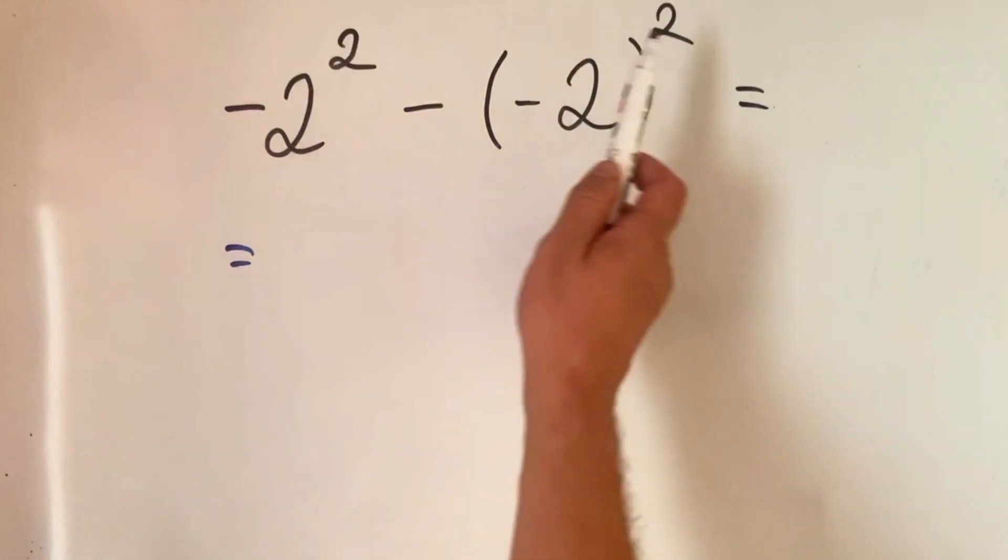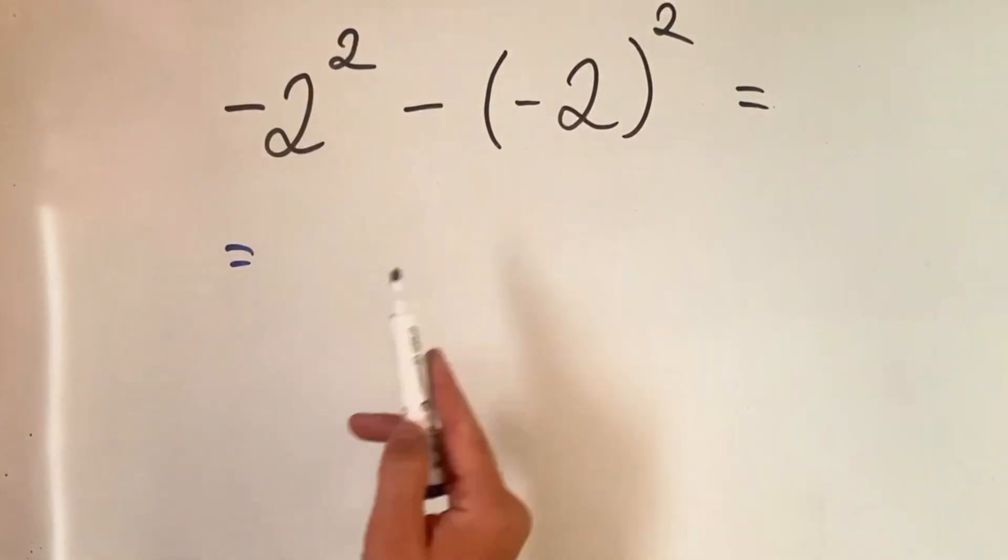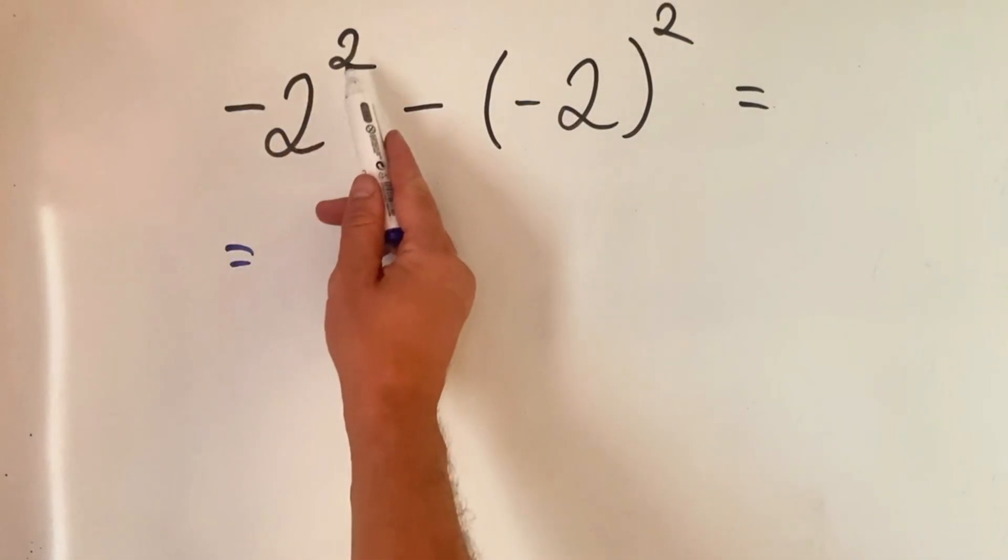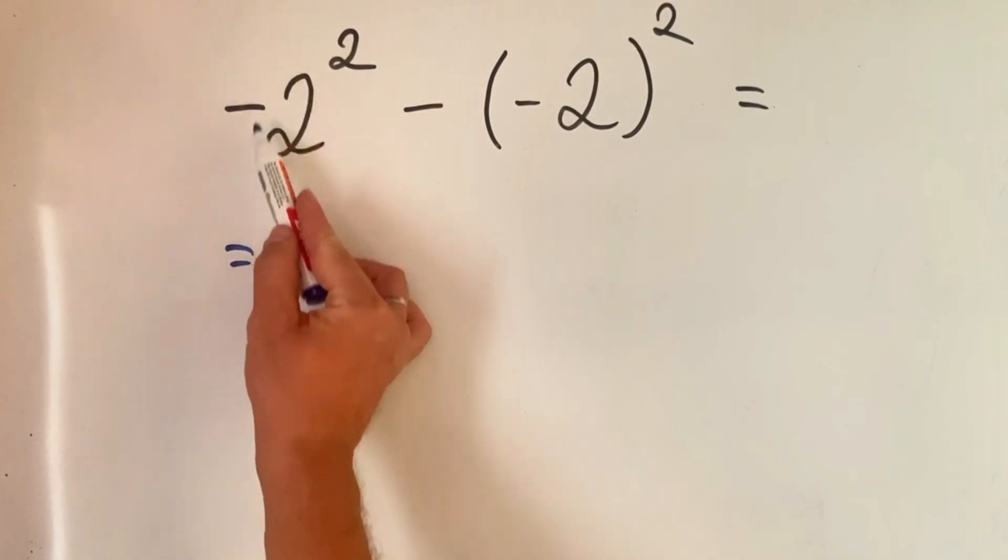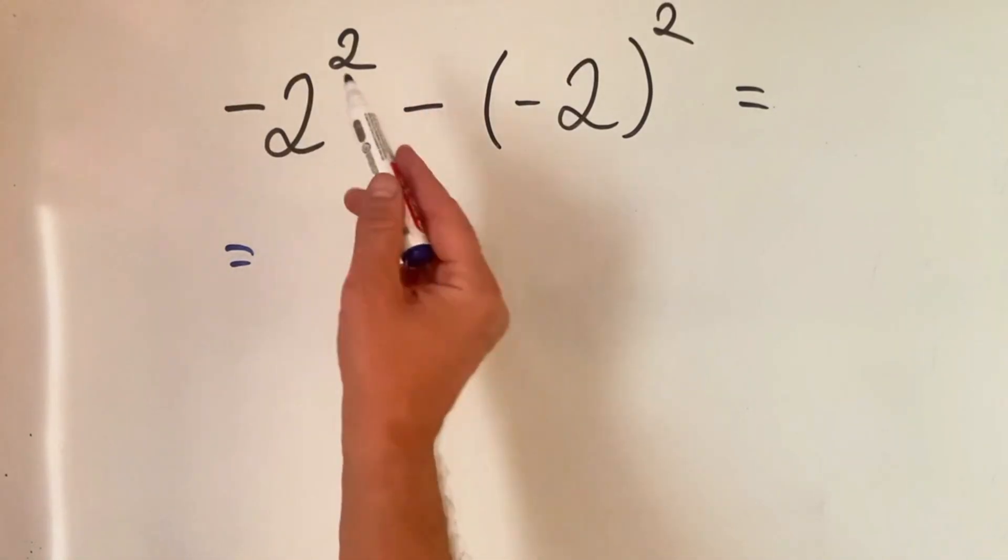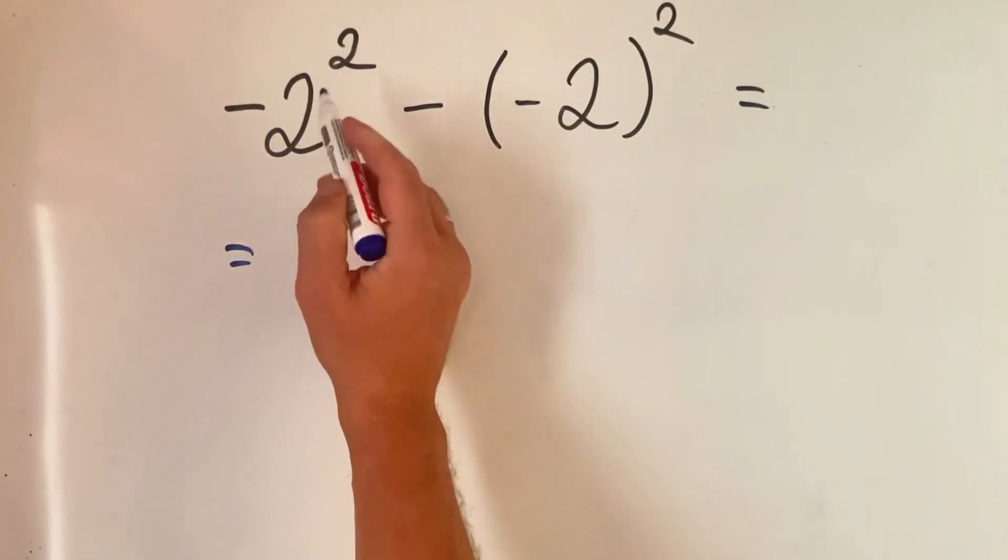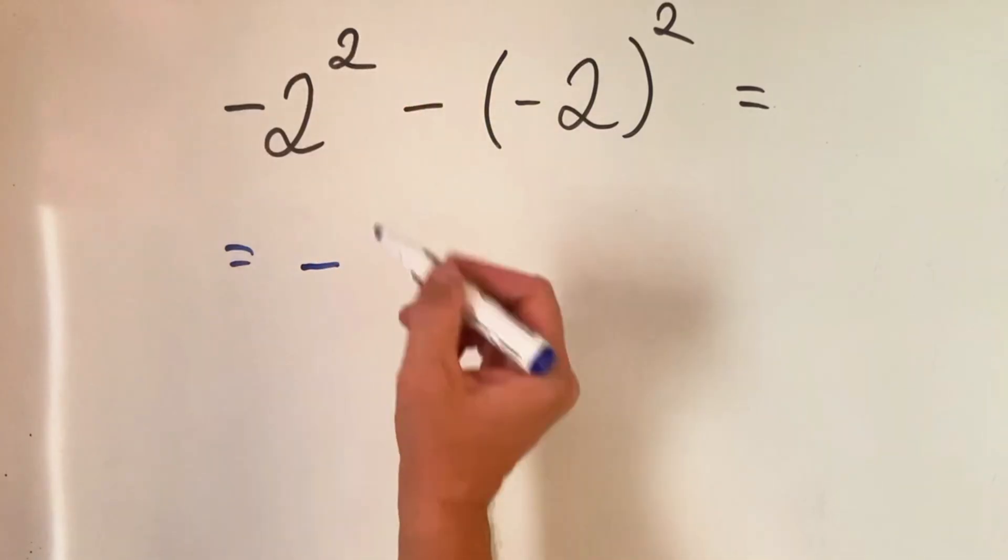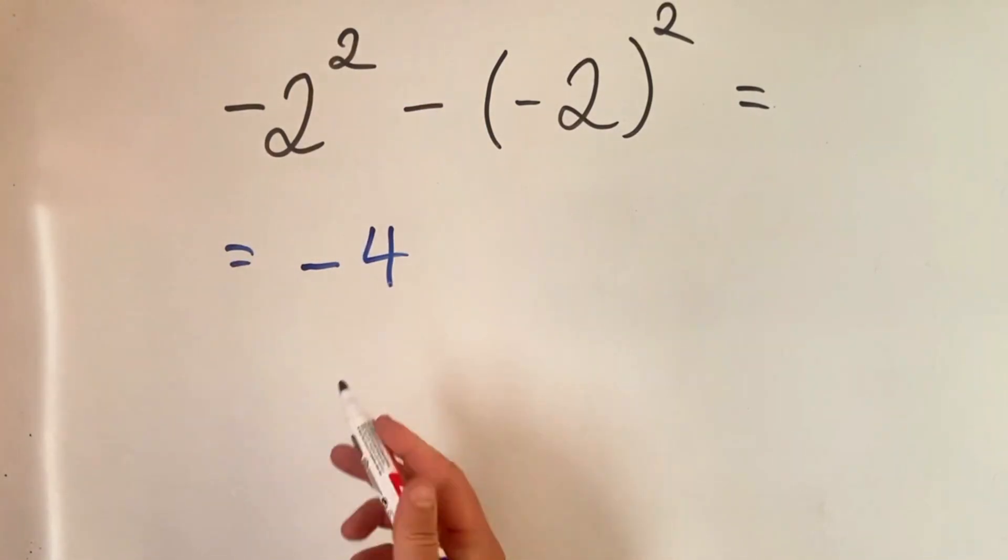In our case we have minus two squared, but because two is not in parentheses we leave it as it is. So minus two squared is minus four. So when we have an exponent but the number is not in parentheses, we just in this case squared the number itself, we don't touch the sign.